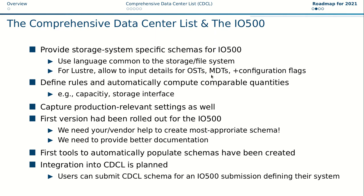When you talk about Lustre, you talk about OSTs and MDTs and certain configuration flags that are relevant. When you talk about Spectrum Scale, you have different knobs and system components. The Lustre schema looks different than the Spectrum Scale schema, which looks different than the GPFS schema and so on. There are certain rules and automatic aggregation to compute comparable quantities used at IO500 to create derived lists. We need vendor help particularly, but also your help is appreciated if you have suggestions on how to improve it, because we want the most appropriate schema that can be easily understood by users.